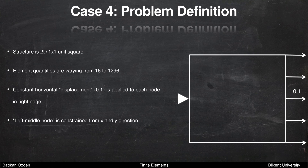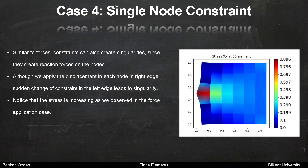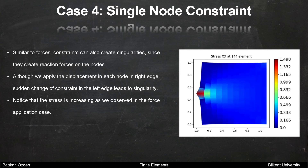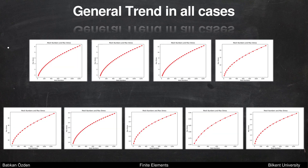For case 4, we have a 2D 1-by-1 unit square. Element quantities are varying from 16 to 1296. A constant horizontal displacement of 0.1 is applied to each node in the right edge, while the left middle node is constrained from x and y directions and other nodes are free. Similar to forces, constraints can also create singularities since they create reaction forces on nodes. Although displacements are applied to each node in the right edge, the sudden change of constraints in the left edge leads to singularity. The maximum stress increases from 0.68 to 3.58 with increasing element numbers.